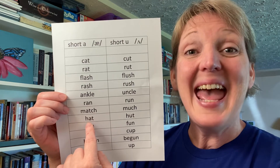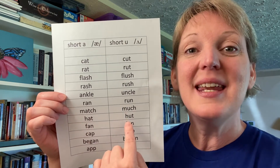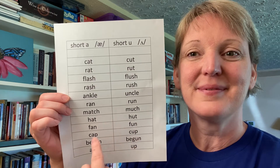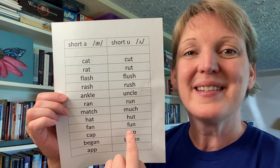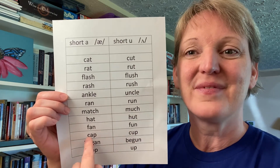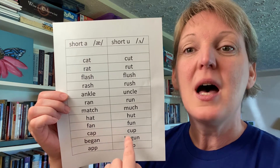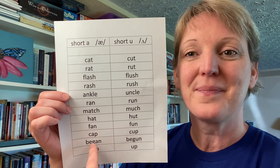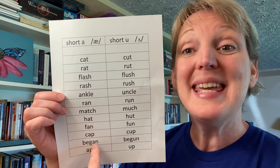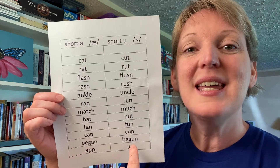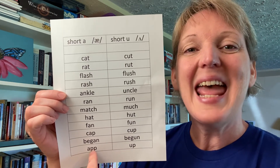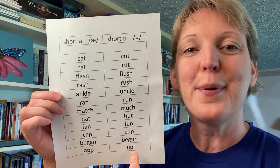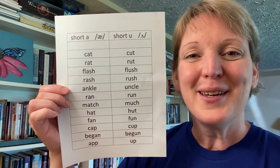A in hat — U in hut. A in fan — U in fun. A in cap — U in cup. A in began — U in begun. A in app — U in up. Good! Now we're going to work on two sentences — one primarily has the /æ/ sound, the other primarily has the /ʌ/ sound.